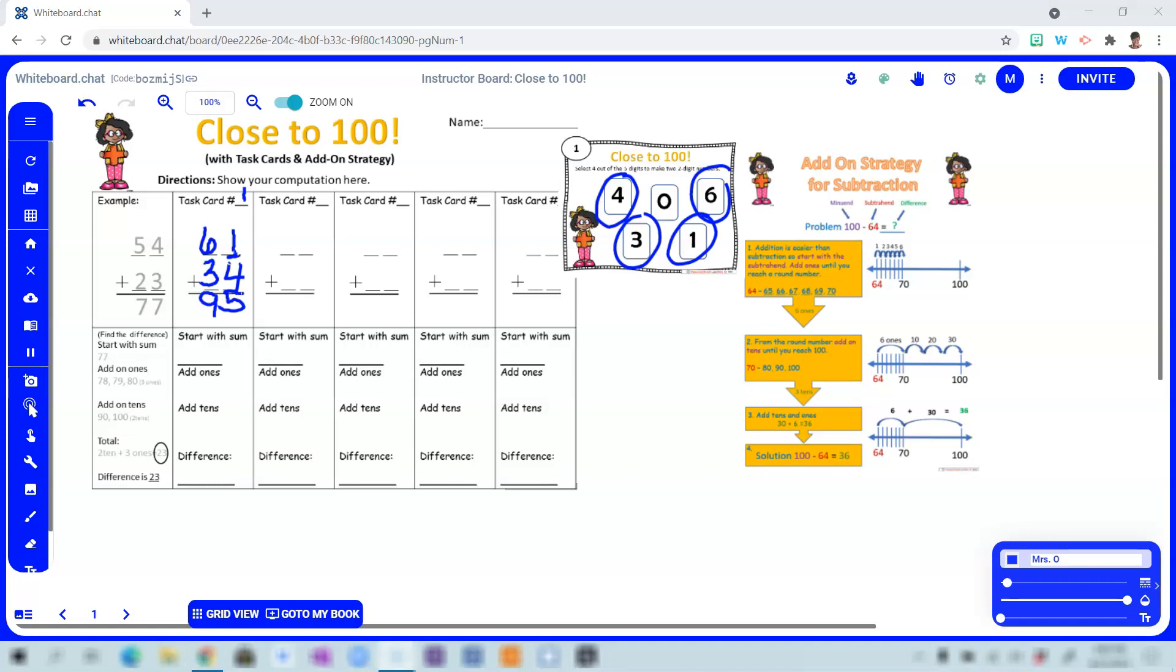Now, the next part requires that students find the difference between 100 and 95. This is when I would introduce the students to add-on strategy, because most students find it a challenge to subtract numbers that include a series of zeros. So instead, with the add-on strategy, and the anchor chart is available for them right there as a reminder, they start with the sum and then they add on, beginning with ones and then tens, until they get to 100.